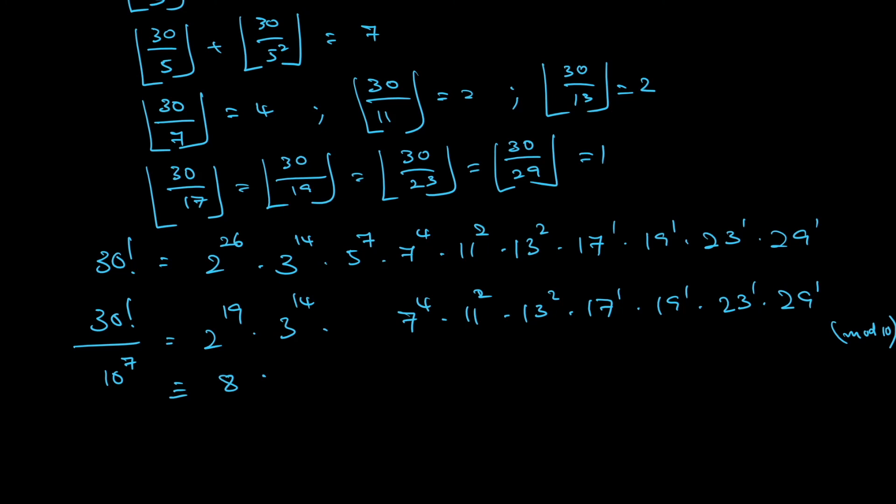3 to the power, the last digit of power of 3: 3, 9, 7, 1, and then repeat. Power is 14. 14 divided by 4 remainder is 2. So it would have the same remainder as 3 squared, so that is 9. Do the same thing here. 7 to the power: 7, 9, 3, 1, and then repeat. 7 to the power 4 is basically this one. Then the rest: 11 squared is 1, 13 squared is 9, 17 is 7, 19 is 9, 23 is 3, 29 is 9. You multiply all of these together. Notice that we are only interested in the last digit. Multiply all of this together, you notice you will get 8.